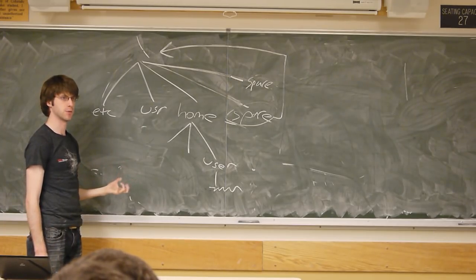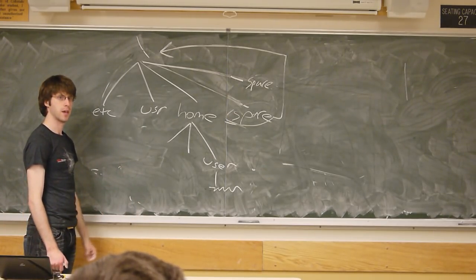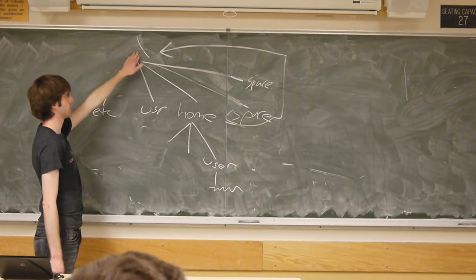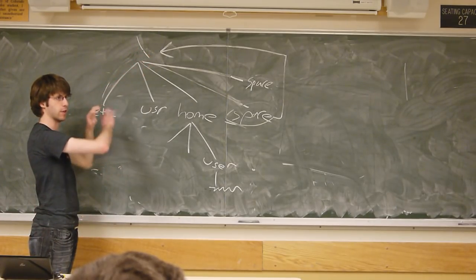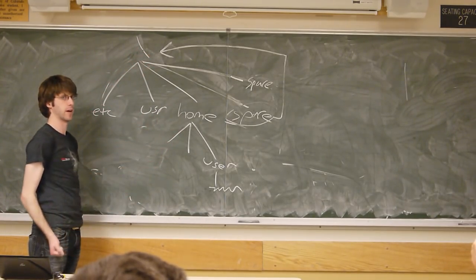The file system is pretty malleable on a POSIX system, but it all revolves around a tree with a single top mount point. Everything is accessible through one unified namespace.